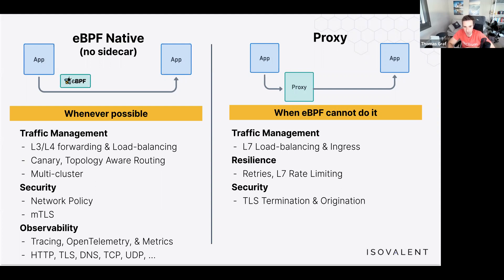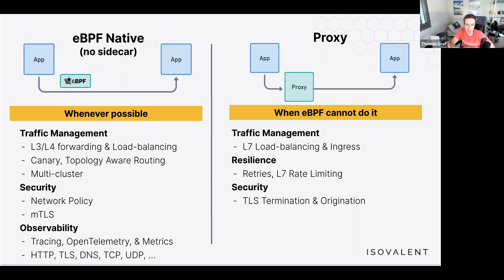When you need layer 7 traffic management — path-based routing, header-based routing, SNI/hostname-based routing, and ingress — a proxy is still used. The same applies to resilience features like retries, layer 7 rate limiting, and TLS termination and origination. For bandwidth limiting by HTTP requests per second, a proxy is needed, though pod bandwidth can be limited without a proxy using the network bandwidth manager.